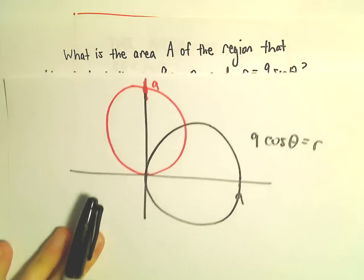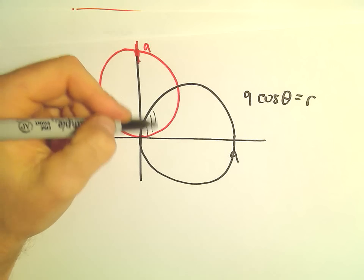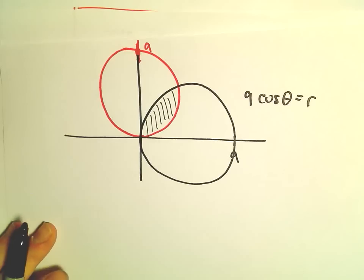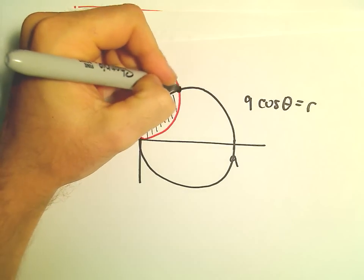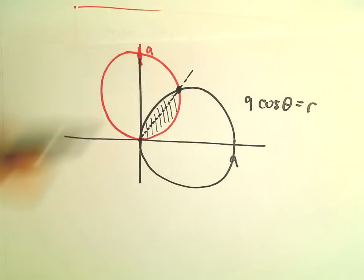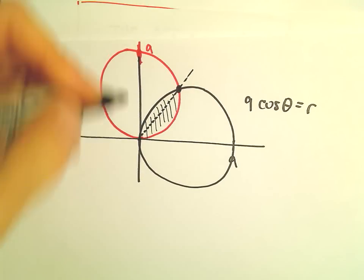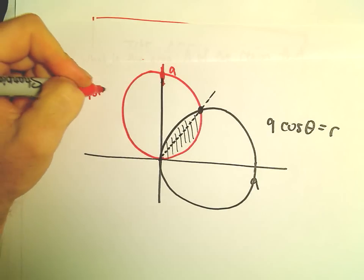So we're trying to find the area enclosed by both of these, which is going to be this little shaded area. The way I'm going to compute this is first I'm going to find this little point of intersection that corresponds for what value of theta are they going to be intersecting. This is 9 sine theta.